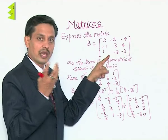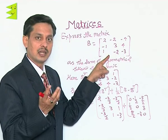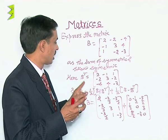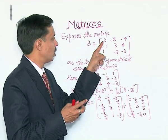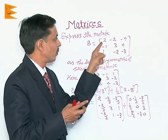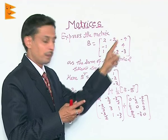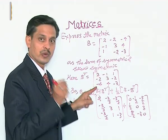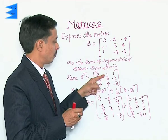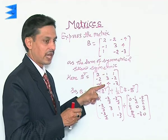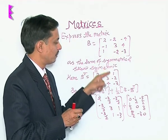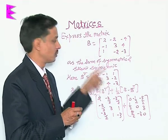So, to get that result we need to obtain the transpose of B. B transpose is formed by turning rows into columns: the first row [2, -2, -4] becomes the first column, [-1, 3, 4] becomes the second column, and [1, -2, -3] becomes the third column.